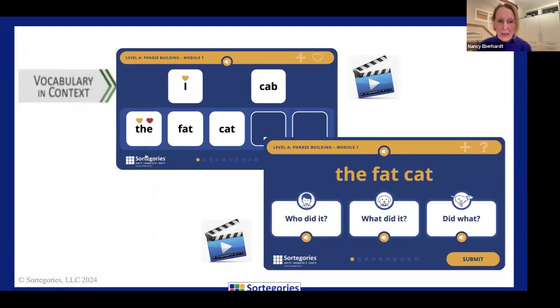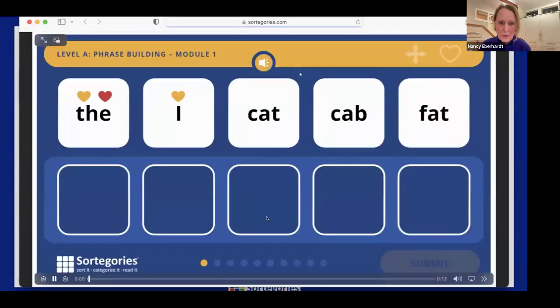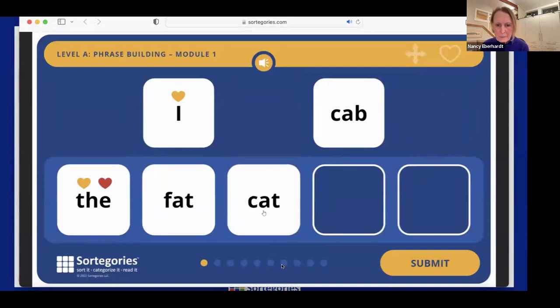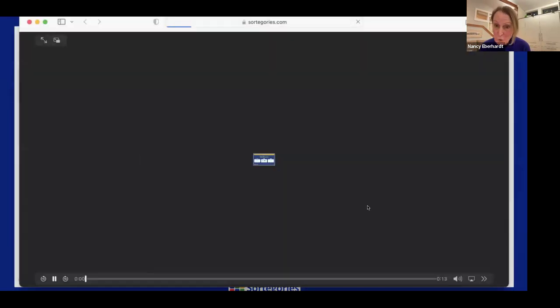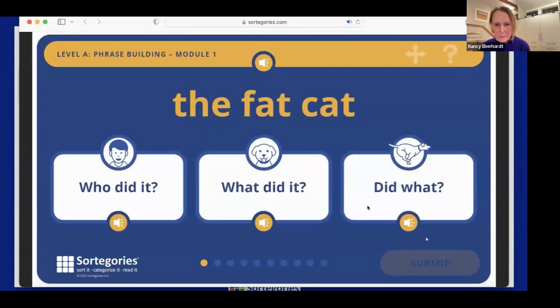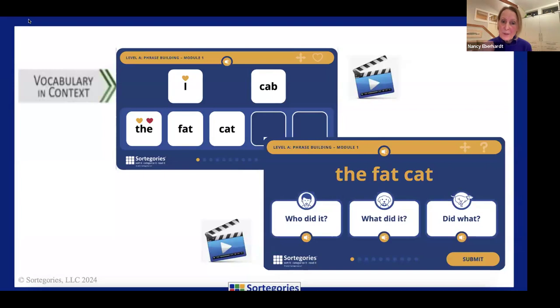And one of the other things we were striving for in these activities is to really develop the oral language around using these words and think of how much conversation could go on with that activity. Then, as we were saying earlier, we want to get into context. So we have a little video of phrase building where students are going to build a phrase using words that they can decode. So this is build 'the fat cat.'